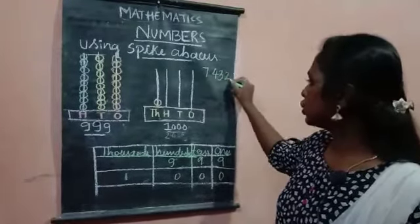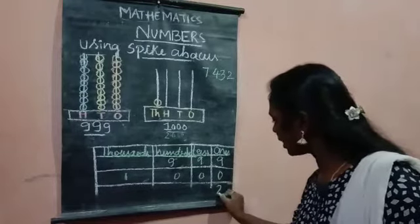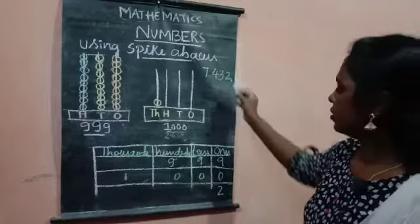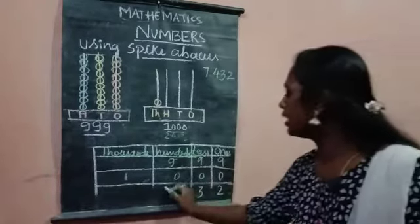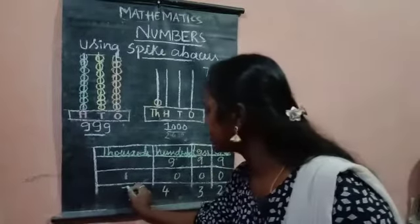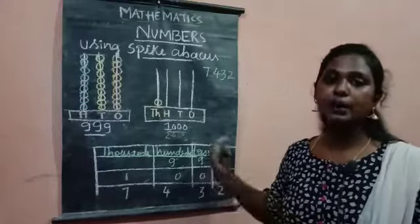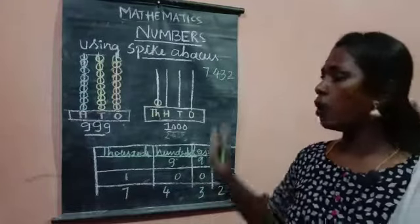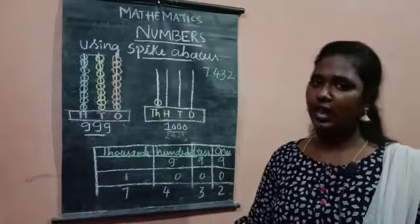So, start with 2. Write 2 in 1's place. So, 2 I am going to write in 1's place. Again, 3 in 10's place. 4 in 100's place. And 7 finally in 1000's place. So, this is a way we have to write the numbers in the chart. So, I hope you understood with this how to write our numbers. Thank you so much.